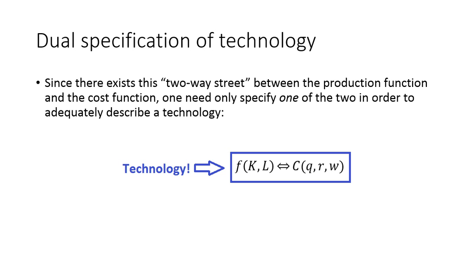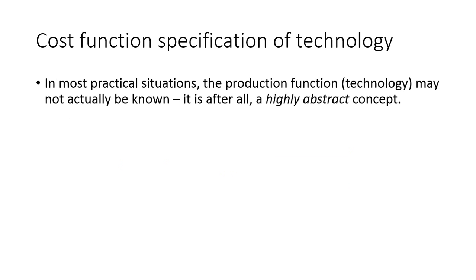These are the two different ways to actually specify the same technology. I could tell you the output function F, or I could give you the optimized cost function. In most practical situations, the production function itself is often not known. After all, it's a very highly abstract concept, sort of this black box where we convert inputs into outputs.